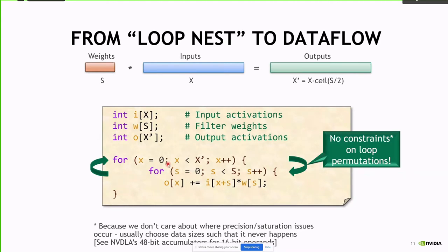There's an assumption here that we can permute these loops without any changes. Of course, there will be changes to when operations occur if you permute the loops. If you don't choose the size of your accumulator correctly, you can lead to changes in results because you can change when saturation occurs. What accelerators do in practice is size their accumulators to be bigger than their operands, enabling free loop permutation without worrying about saturation.